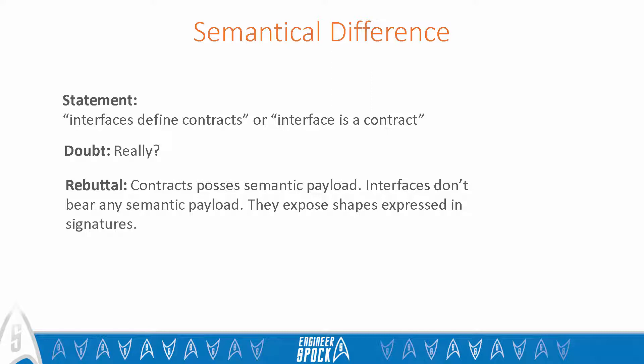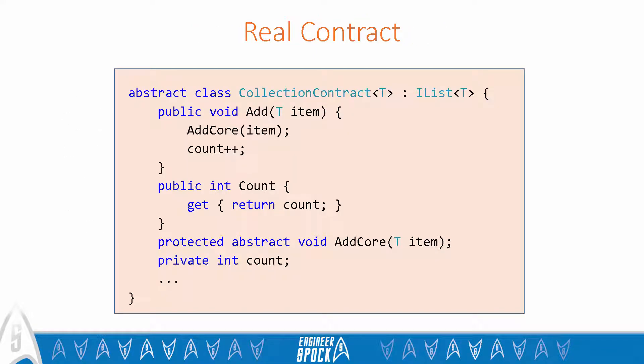Here is an example of a true contract provided by Krzysztof Kwalina. This contract says that when an item is added to the collection, the count property is incremented by one. Also, this contract is locked for all subtypes. This is a real contract since it imposes semantics.